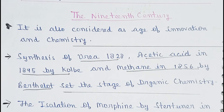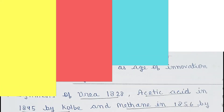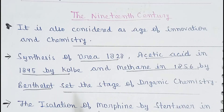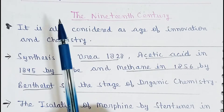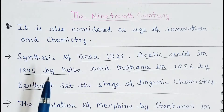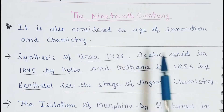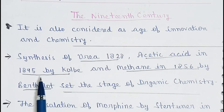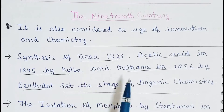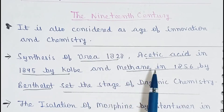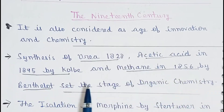धीरे-धीरे जब medicinal chemistry का development हुआ, नए-नए scientists और researchers आये और तरह-तरह के experiments करके नए-नए drugs का निर्माण किया। उसमें पहला जो synthesis हुआ 1828 में — वो है urea। उसके बाद acetic acid in 1845 by Kolbe, and methane in 1856 by Berthelot, set the stage of organic chemistry।